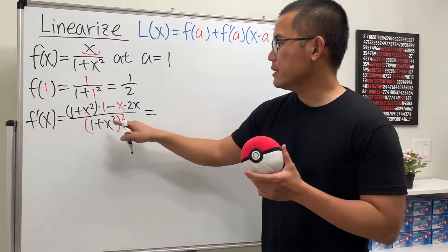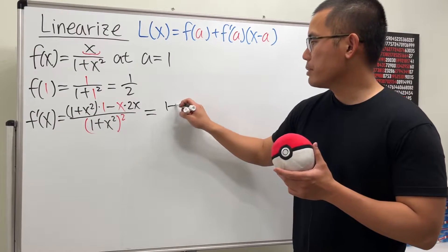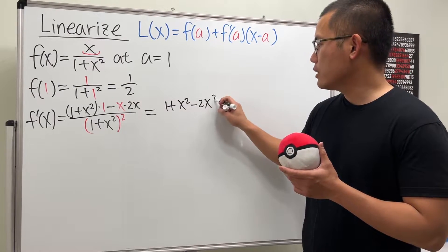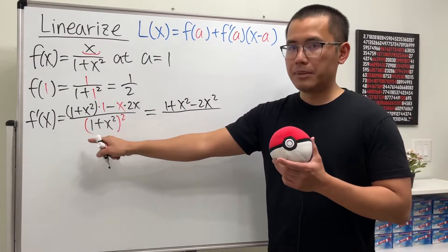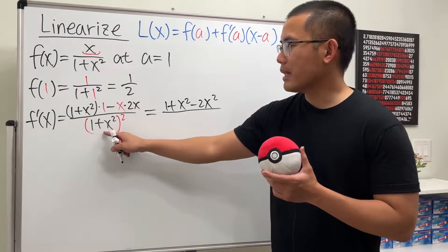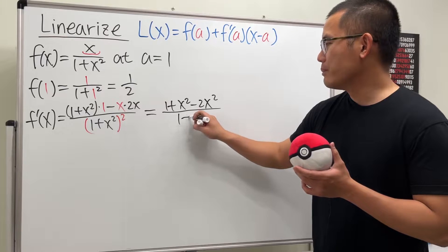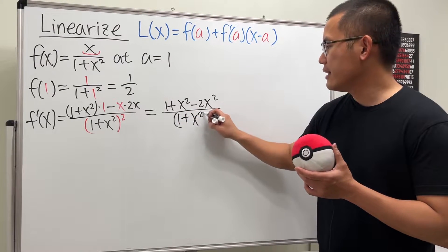And perhaps we can clean things up a little bit. Because this right here is just 1 plus x squared. And then we will have minus 2x squared over this denominator. And be sure you don't write this as 1 plus x to the fourth power. Don't do that. Just keep it as how it is. 1 plus x squared, and then square.